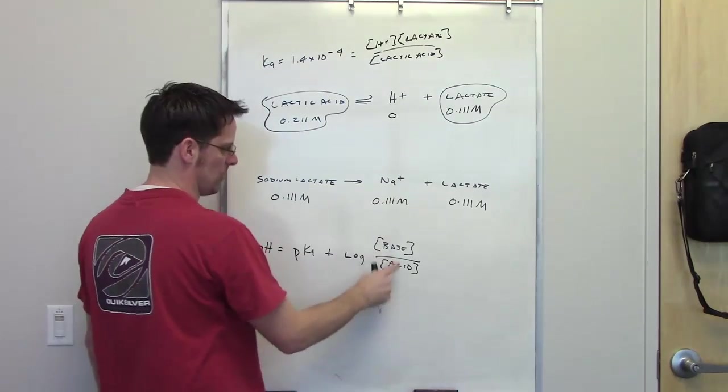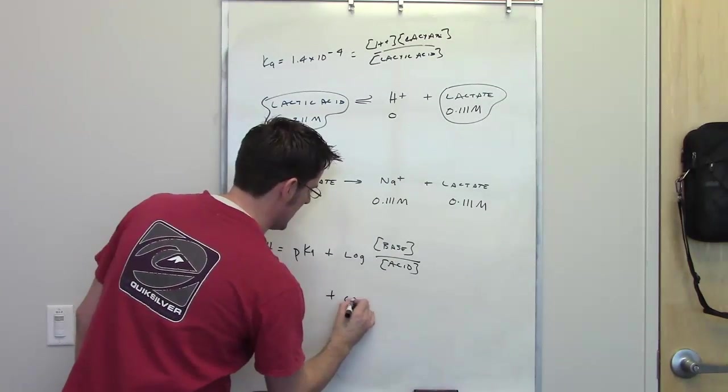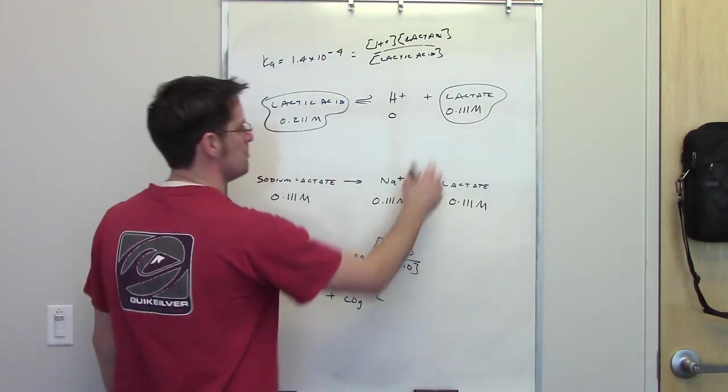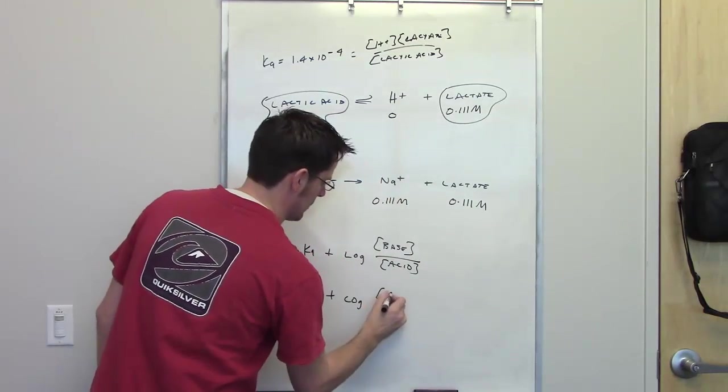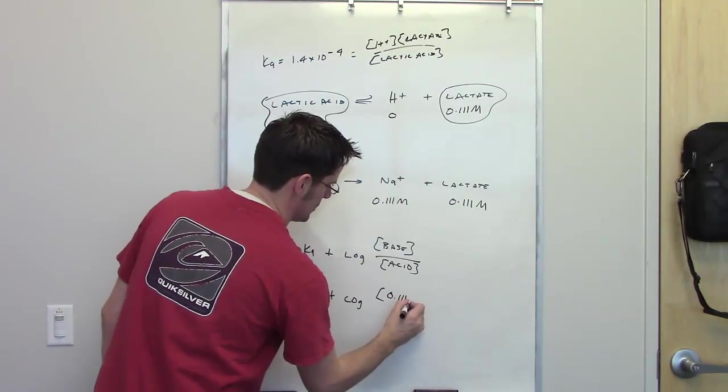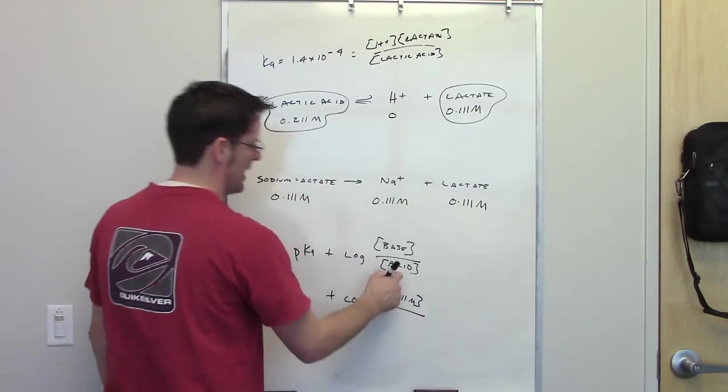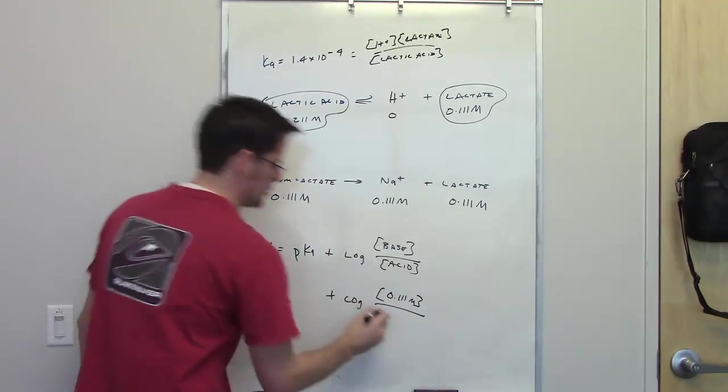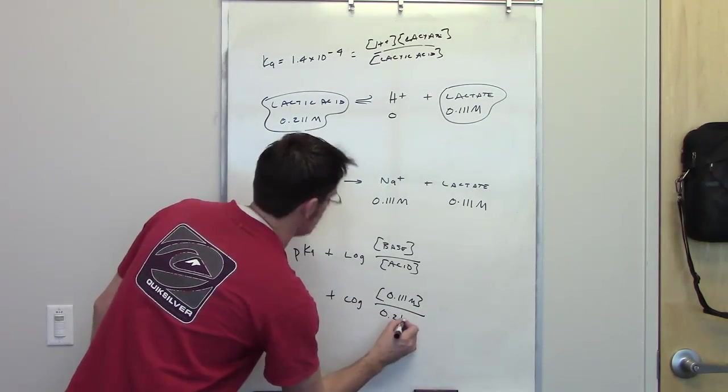In other words, I've got log of the base's concentration at initiation, which is 0.11 molar, divided by the acid's concentration at initiation, which is 0.211 molar.